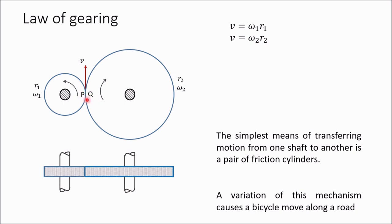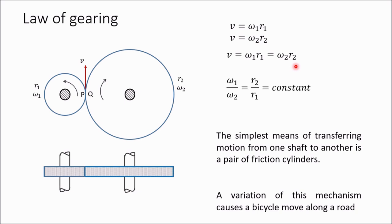For pure rolling without slipping, the relative motion between the two contact points must be zero. So the velocity of p and the velocity of q must be the same. Therefore, v equals omega1·r1 equals omega2·r2. From this relation, omega1/omega2 equals r2/r1. Since r1 and r2 are not changing with time, omega1/omega2 is a constant. This method is acceptable for transmitting low and medium power. But for more power, slipping between p and q will start occurring, and omega1/omega2 will no longer be constant.